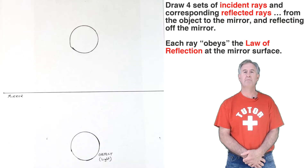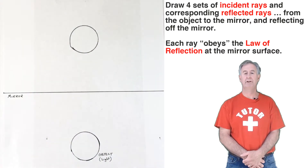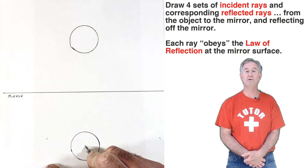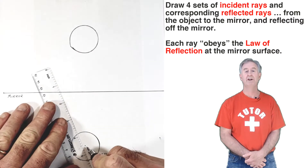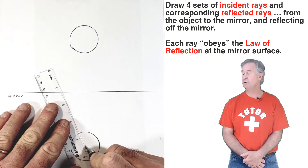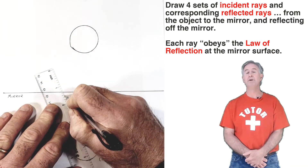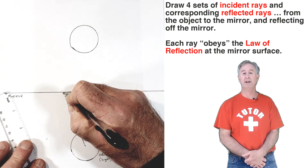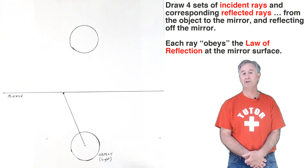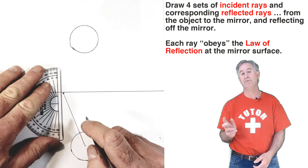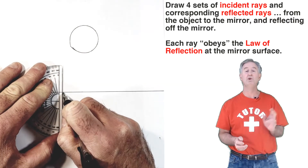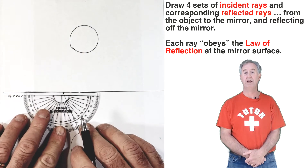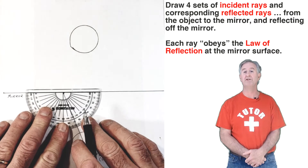This lit bulb, which we placed in front of the mirror, puts off millions of light rays, some of which approach the mirror and bounce off of it. I'm going to do some ray constructing here — drawing four sets of incident and reflected rays. Two of those incident rays will be to the left side of the mirror and two will be on the right side, showing for each incident ray how it reflects off the mirror.